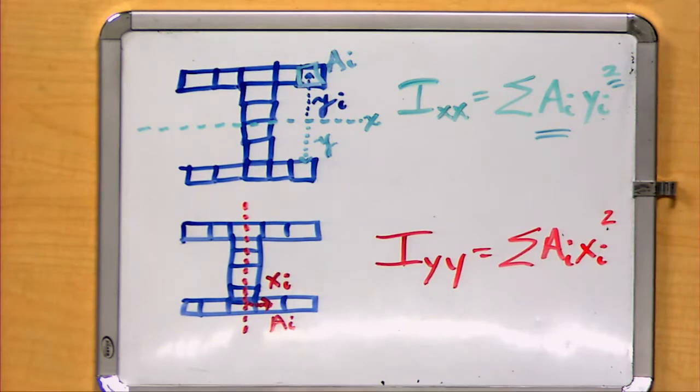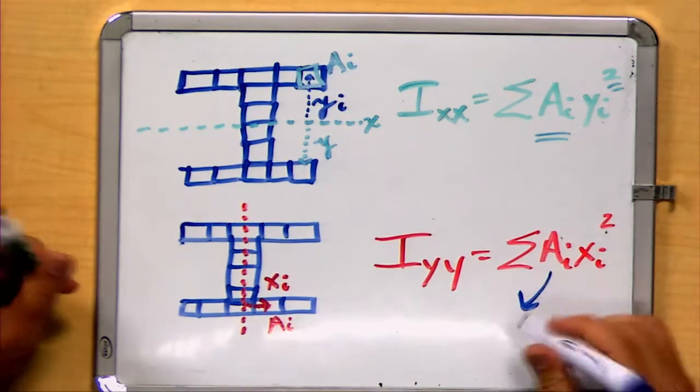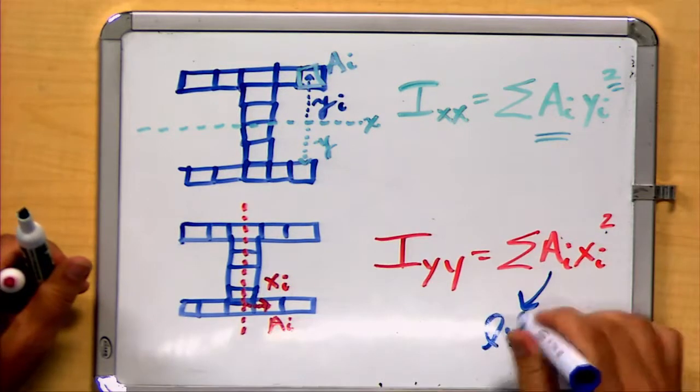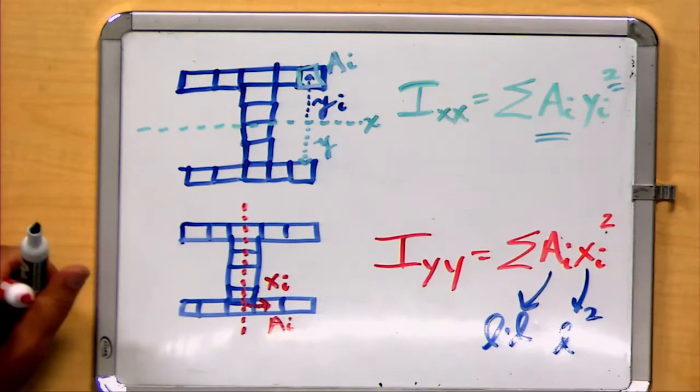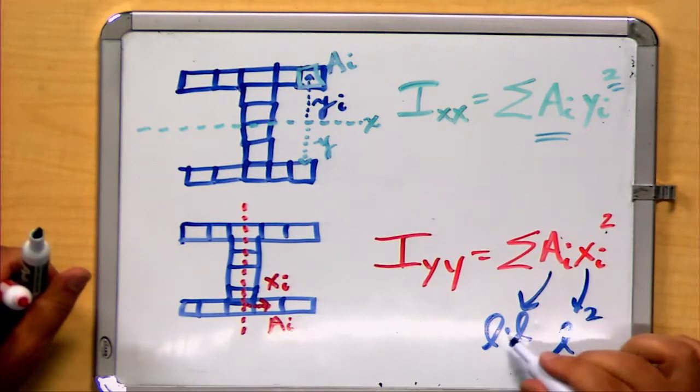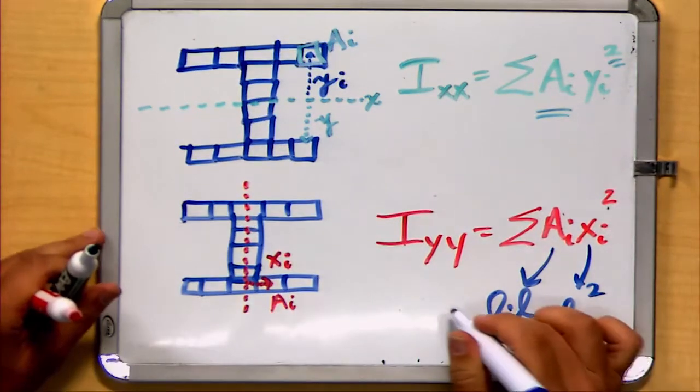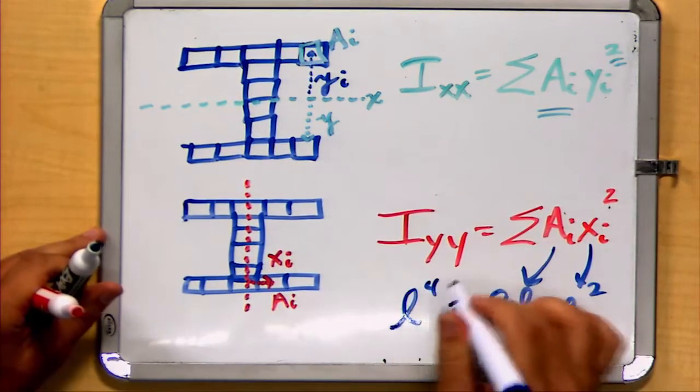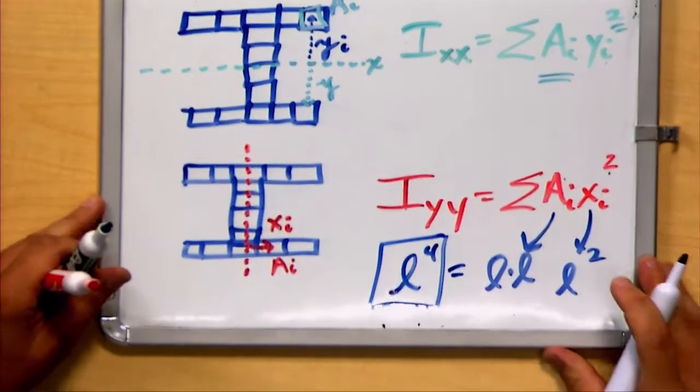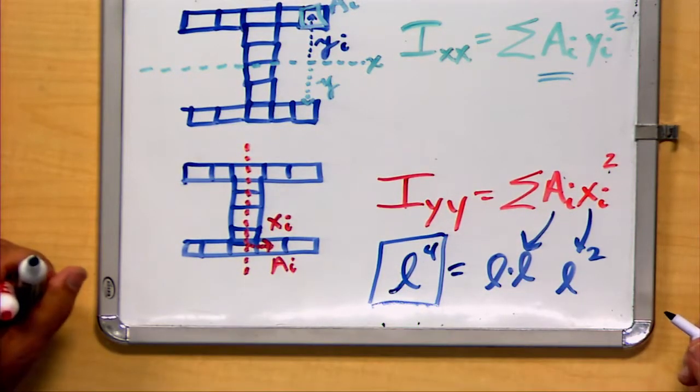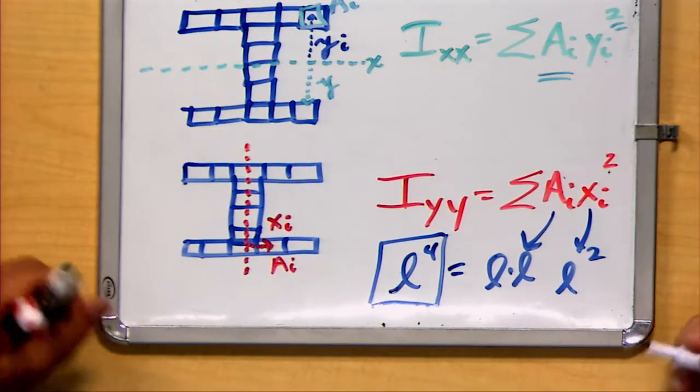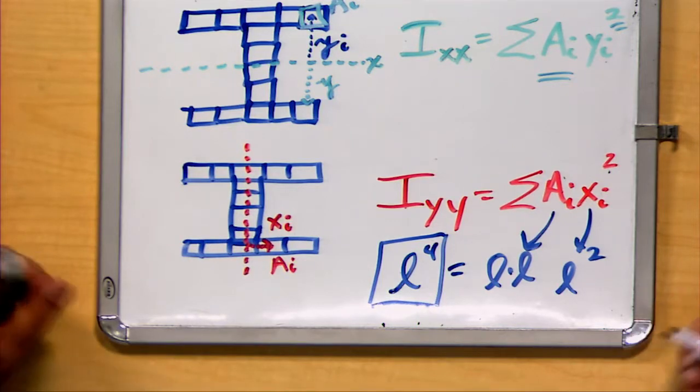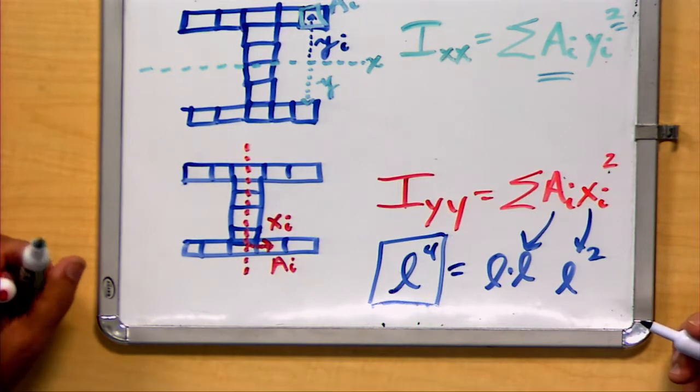Notice the units for both of these. Units of area are going to be in a length times a length or length squared. And this value Xi is also a length, which is in turn squared. So now we have length times length times length squared or length to the fourth. So our units for these type of geometric constructs for the second moment of area are always going to be length to the fourth. For example, centimeters to the fourth, inches to the fourth, or perhaps meters or feet to the fourth, but usually it's much smaller scale for the types of things we calculate.